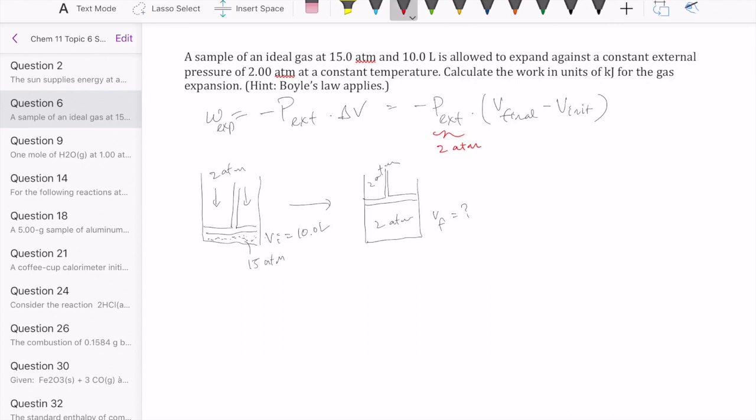As you remember, Boyle's law is P1V1 equals P2V2, so pressure and volume are inversely proportional. If I want volume final, which is my V2, I can calculate by taking P1V1 over P2. P1 is 15, V1 is 10 liters, P2 is 2 atmospheres. Doing that calculation gives us 75 liters as our final volume.